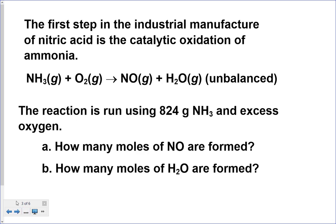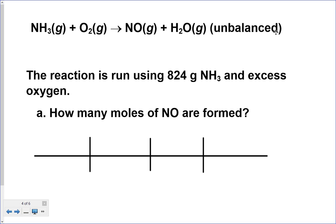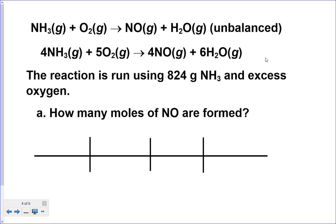This first example converts ammonia to nitric oxide and water. They gave us the formulas — ammonia, oxygen, nitric oxide, and water — but left the equation unbalanced. The reaction is run using 824 grams of NH3 with excess oxygen. This problem asks for moles of NO and moles of H2O, so our answers are both going to be in moles.